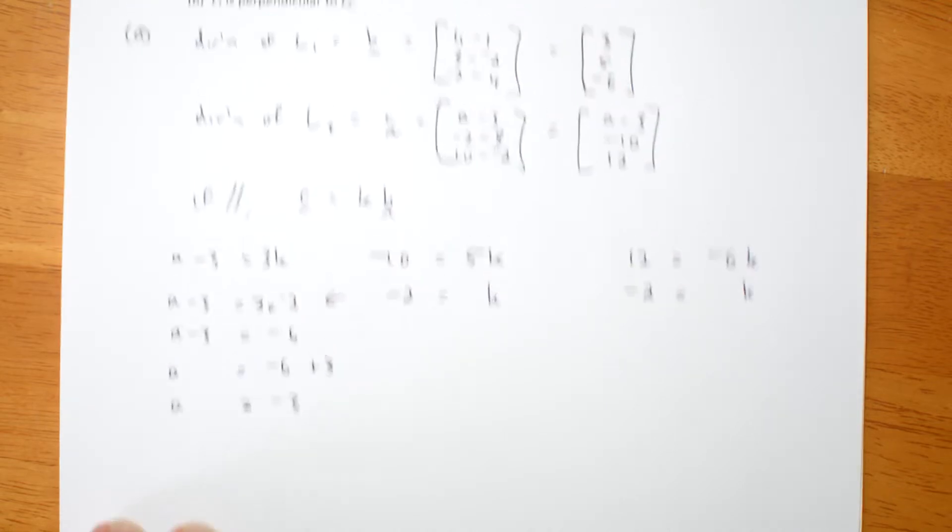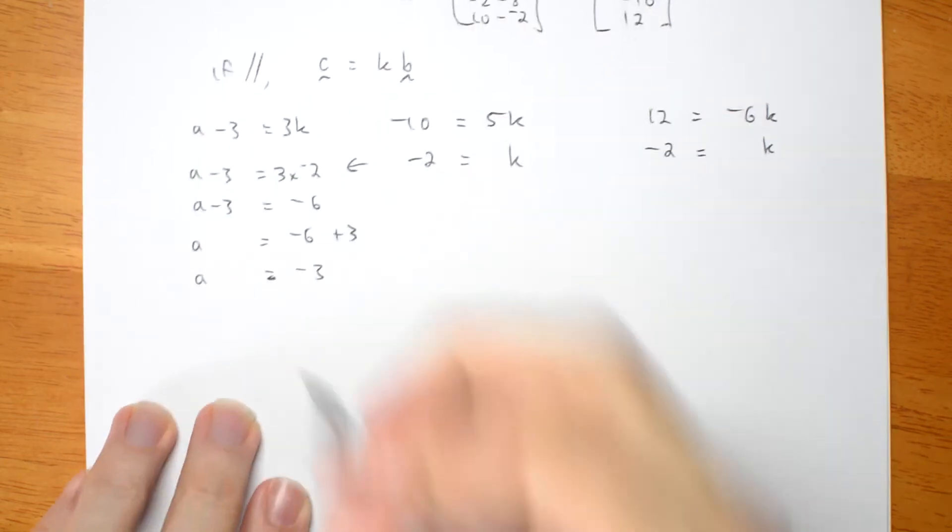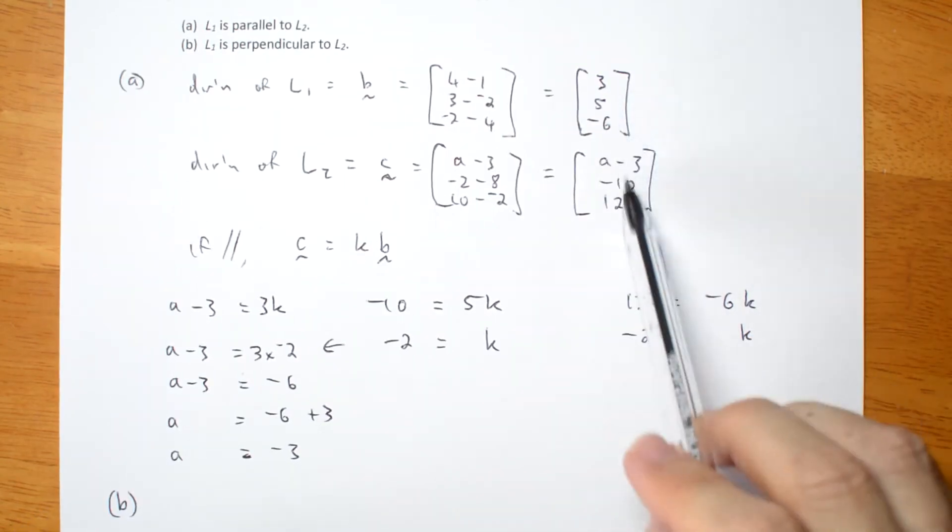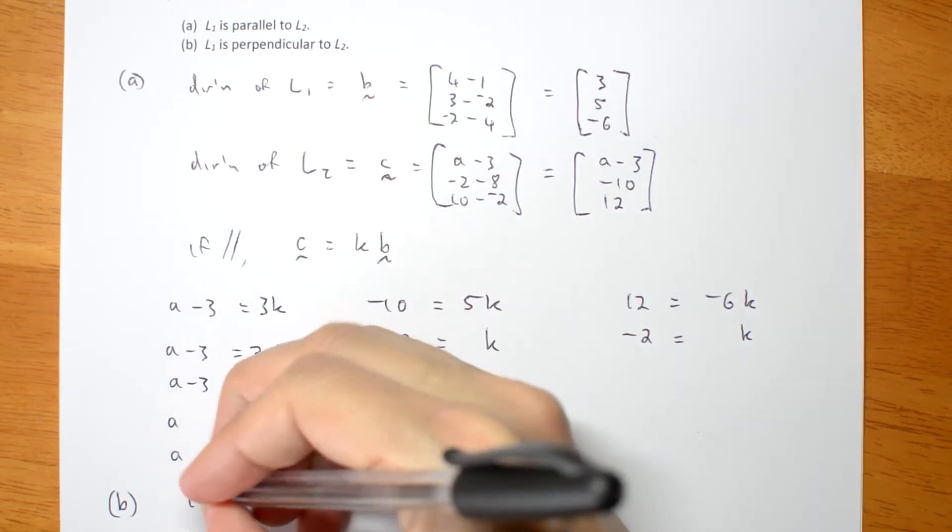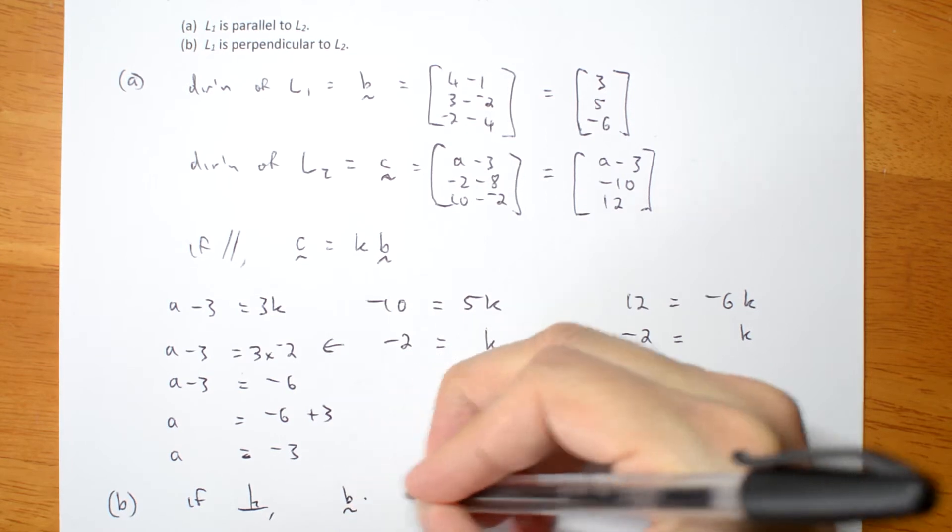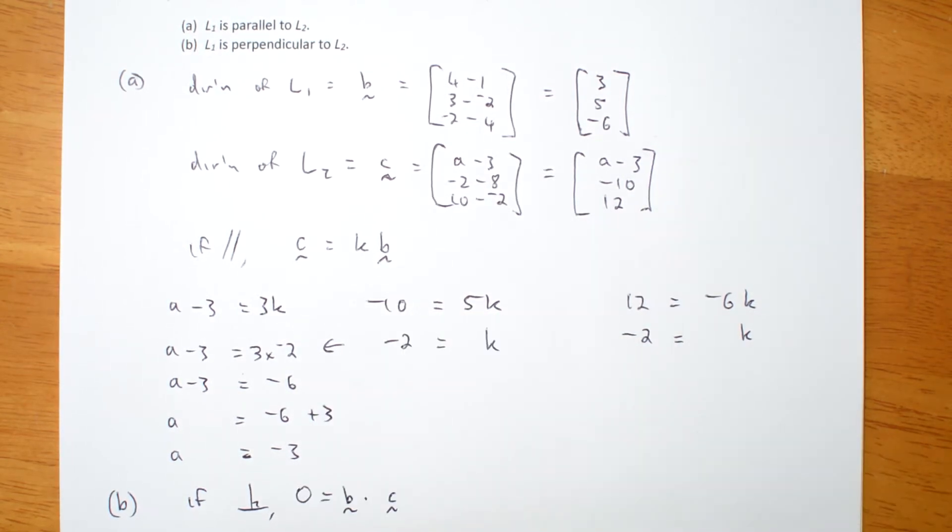Let's try B. What value of A makes the lines perpendicular? Well, if they're perpendicular, then the dot product of these two vectors must be zero. If perpendicular, B dot C must be equal to zero. I've written it there because I'm going to do lots of expanding over here.